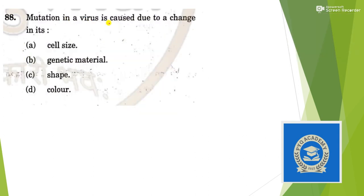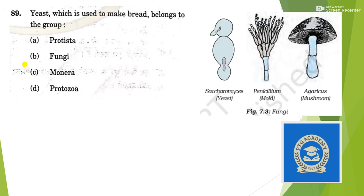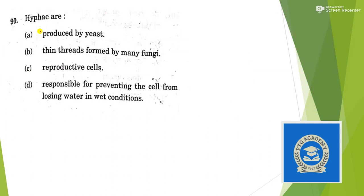Mutation in a virus is caused due to a change in its — very simple — option B, genetic material. Next: yeast, which is used to make bread, belongs to which group? It belongs to fungi. Answer is option B — fungi. Next: hyphae are nothing but thin threads formed by many fungi.